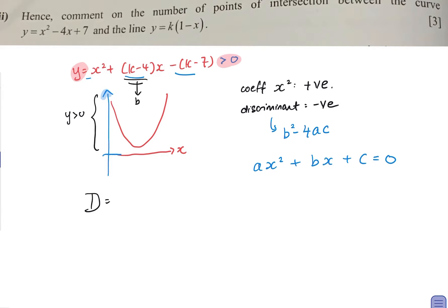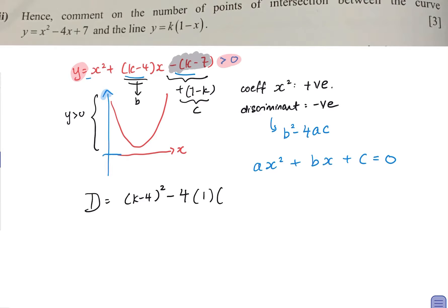Writing down the discriminant: b is k minus 4, so we have k minus 4 squared, minus 4ac. Here a equals 1 since the coefficient of x squared is 1. For c, note that c refers to the entire constant term, which is 7 minus k. We want this discriminant to be negative.